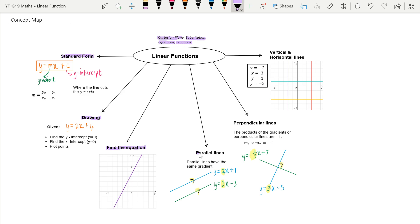Then we're going to look at lines that are parallel. What do they have in common? Perpendicular lines. How do we use the one line to find the gradient of the other line? If they are perpendicular, perpendicular just means that they meet or they cut with a 90 degree angle, right?